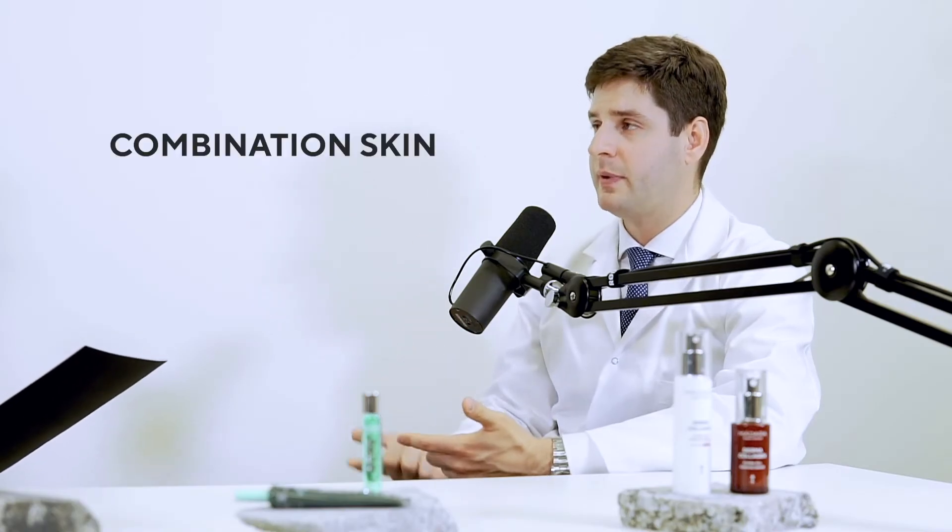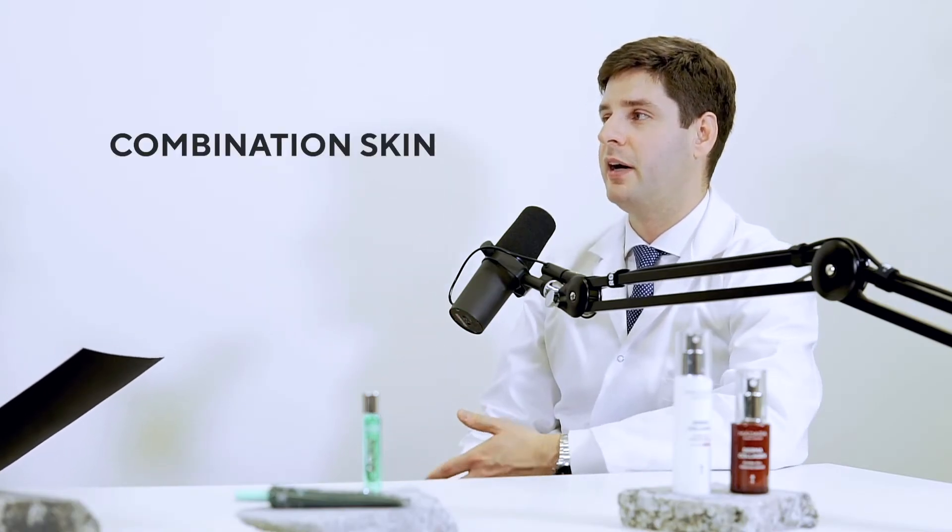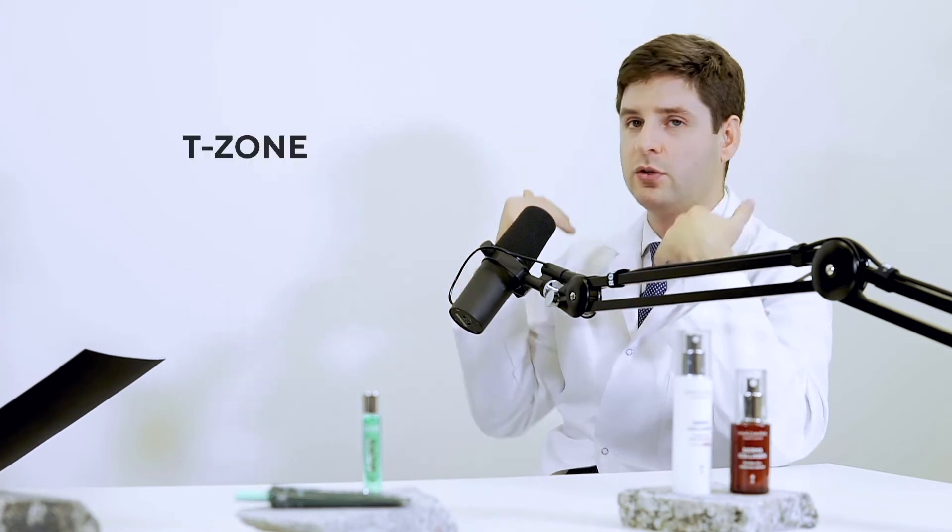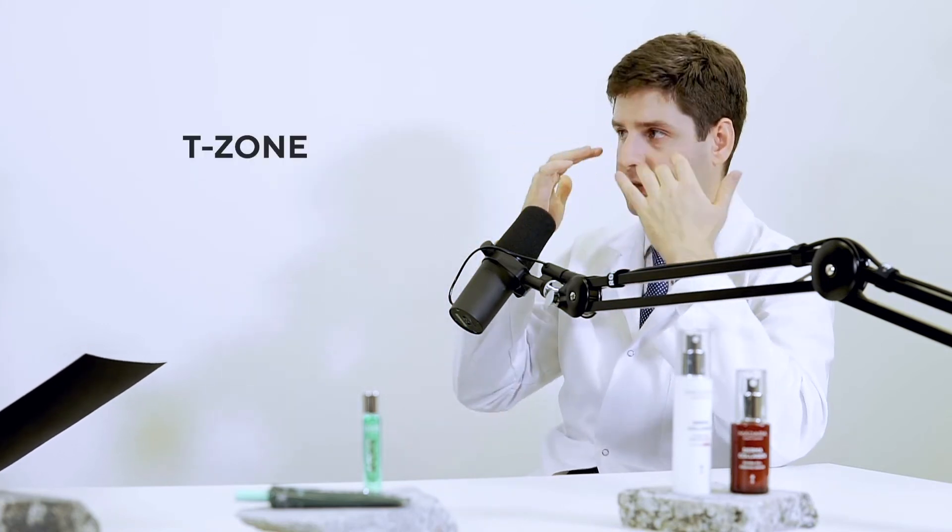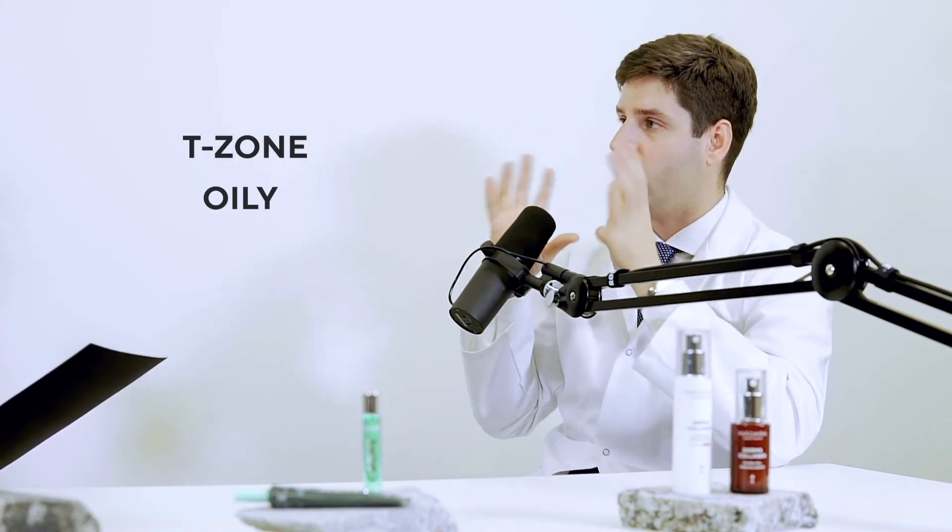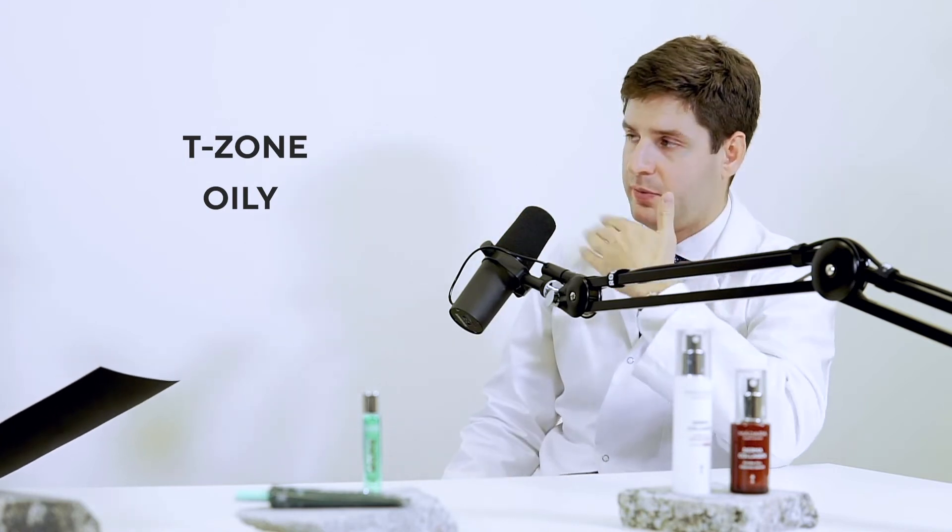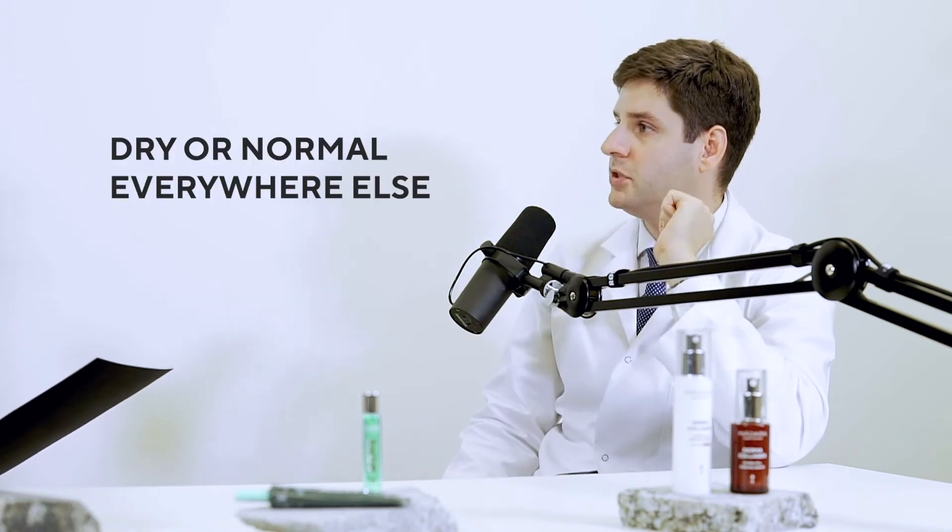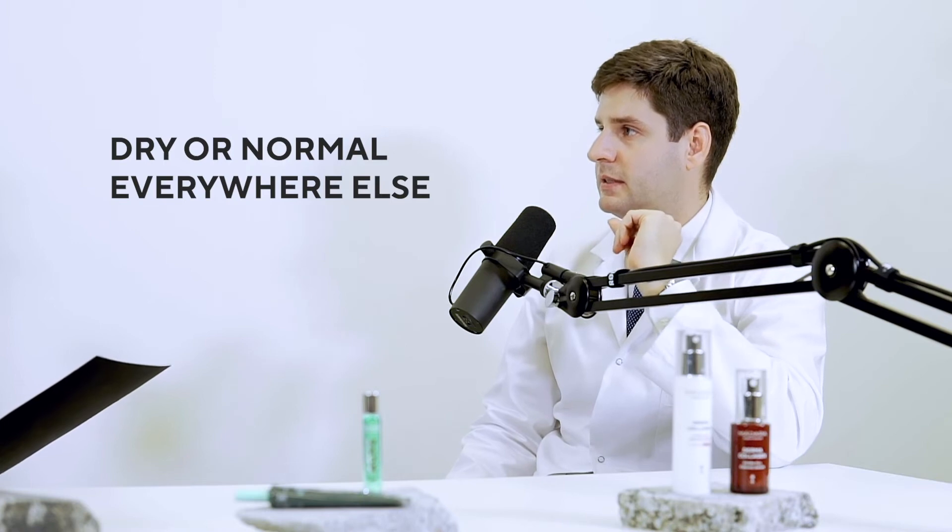About the combined skin type, it's a skin type where you have in some parts, usually the so-called T-zone, so the forehead and your nose, you would have more kind of oily skin. And in the other parts, you would have more kind of a dry or normal skin type.